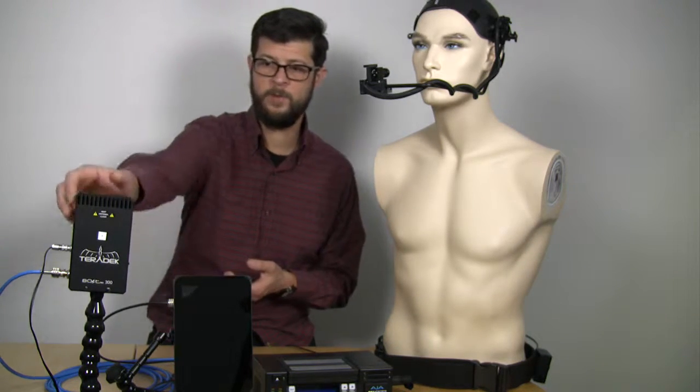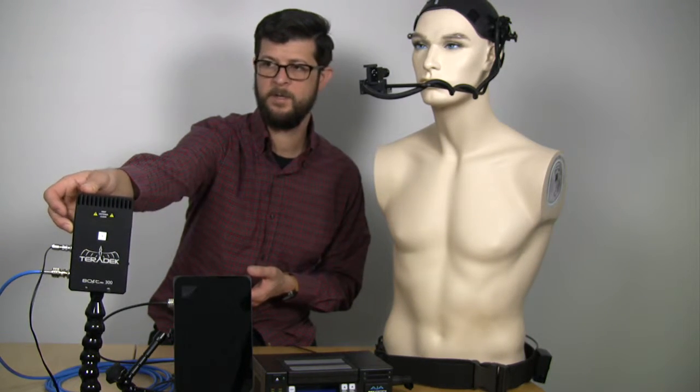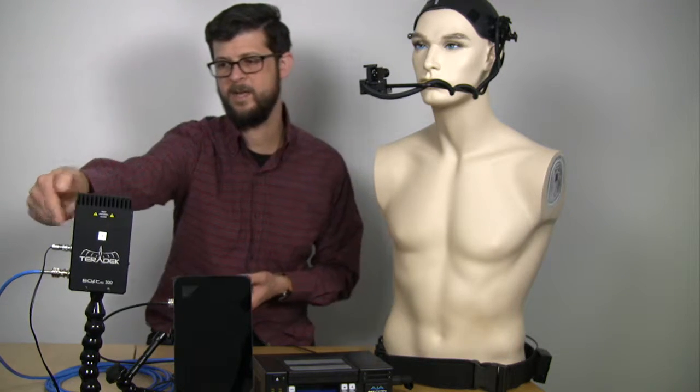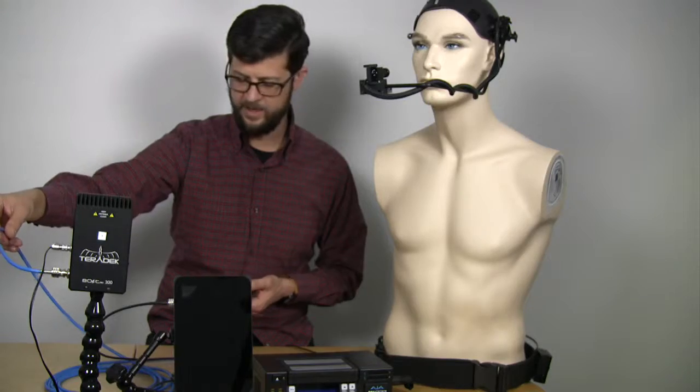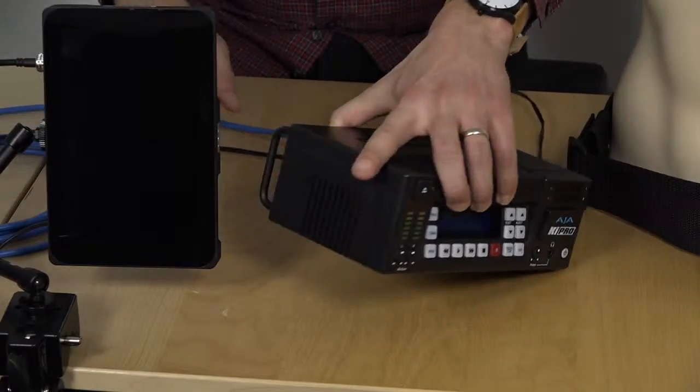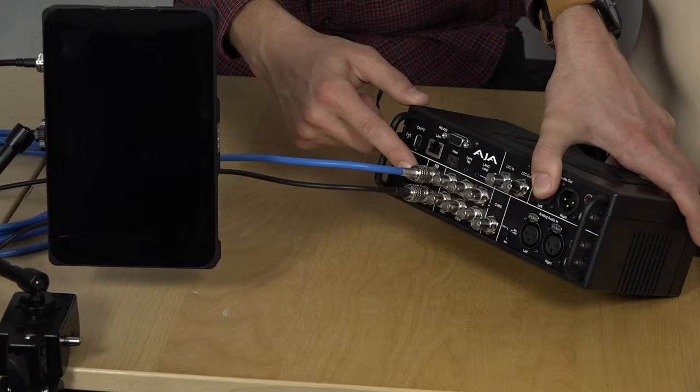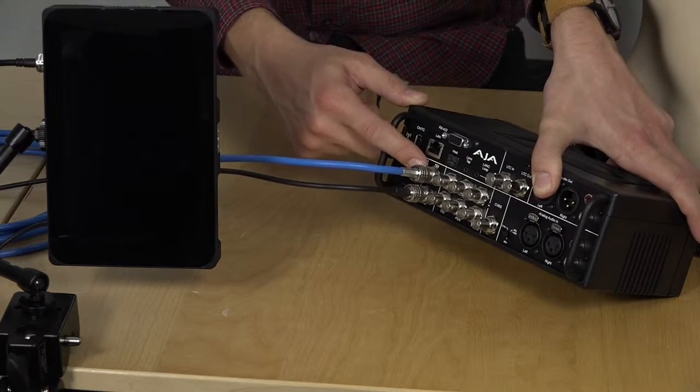So the first thing we're going to do is power up our receiver. Power switch located on the outside, AC adapter plugs right in. There's an HD SDI cable that comes around and plugs into the SDI in on the back of our AJA KeyPro recorder.